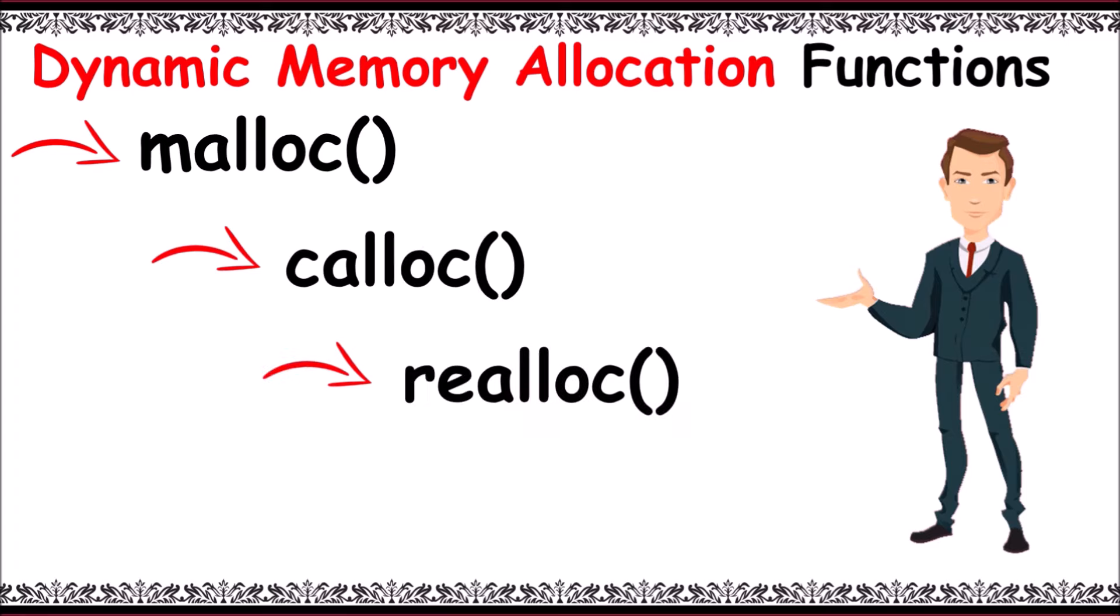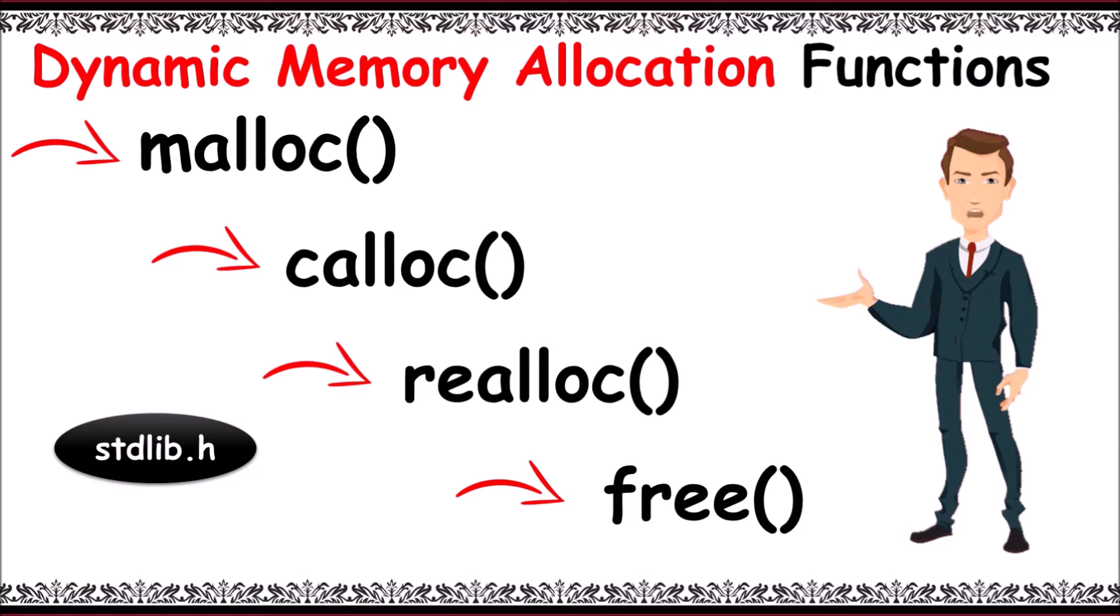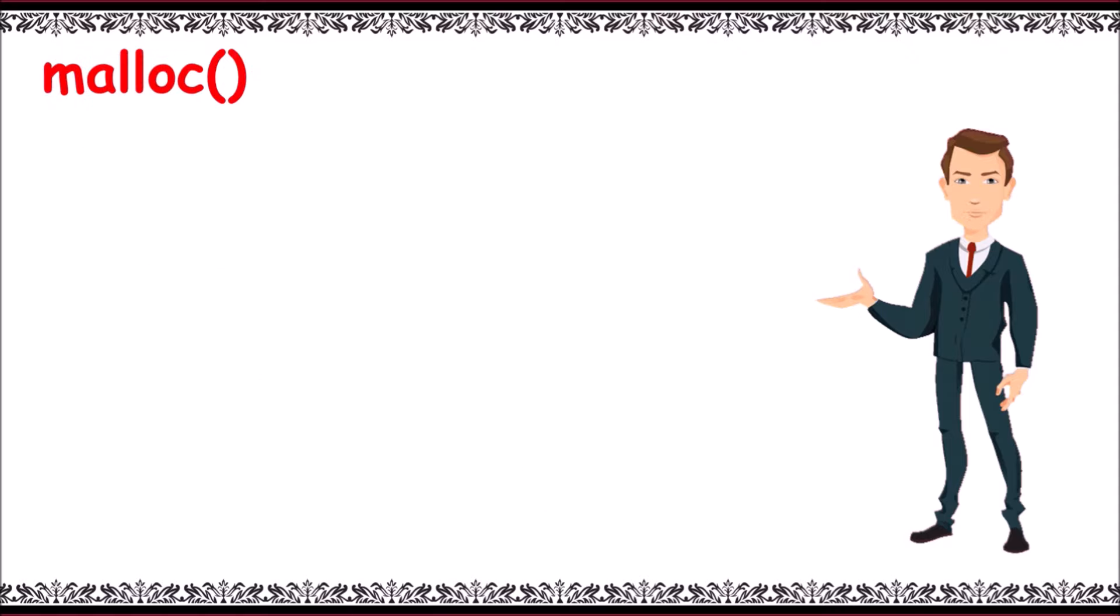Using malloc function, the syntax is: pointer variable equals data type asterisk. We need to mention what type of data we are about to store in that memory, and then related to pointer we write asterisk, then keyword malloc.